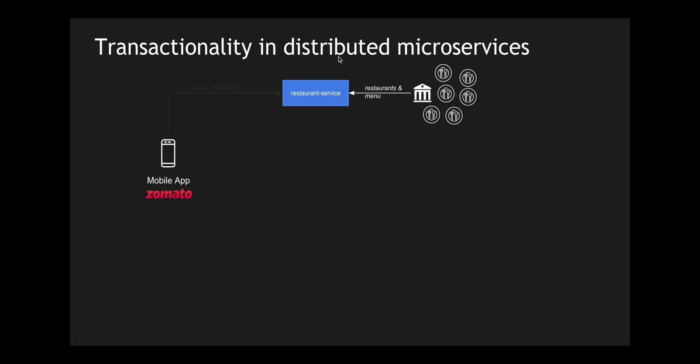The restaurant service gets all that information from the restaurant and menu providers. The user who uses the Zomato mobile app selects a restaurant from the mobile app — all made from the restaurant service. Once the restaurant is selected, the user selects the list of items to add to a cart. When he clicks 'add to cart', the cart information gets added into a UI, and in the backend it gets added to a cart service — because every time you quit the app and log in again, you can see the same cart.